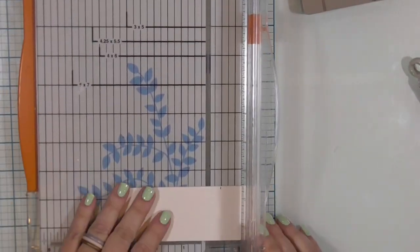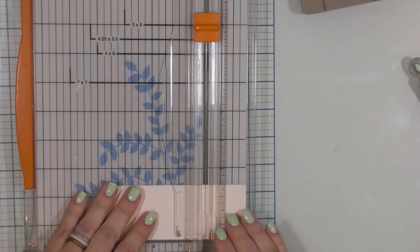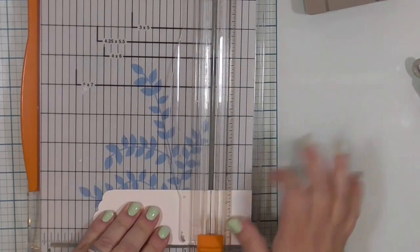All right, I'm going to pull out my Fiskars trimmer, line up that little blue pen mark. There we go, pen mark, words are hard, and trim it down with the blade.